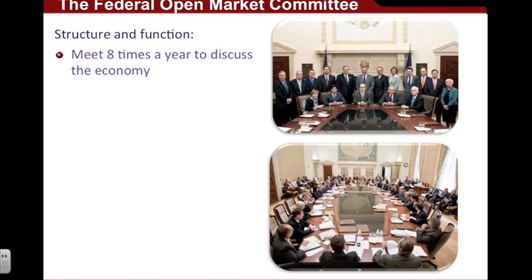The Federal Open Market Committee meets eight times a year to discuss the economy — to determine, is the economy doing well in each of their districts? Should steps be taken to either expand or contract the economy or leave it alone? And the most important question: should they increase or decrease the money supply?